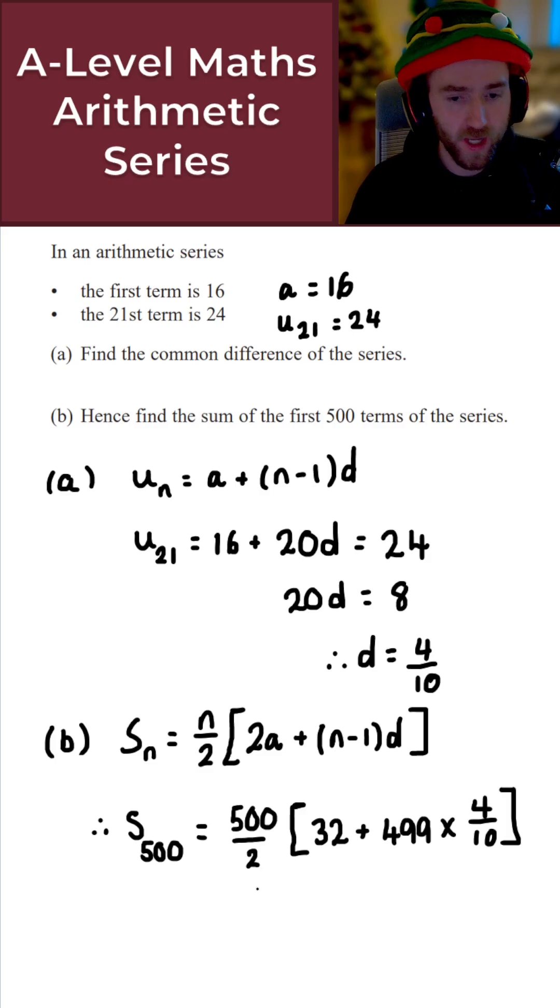Perfect. At this point just put this into your calculator. You don't need to do anything fancy. If you do this correctly, what you'll get for the sum of the first 500 terms of the series is 57,900. There we go, that gives us the solution to today's question.